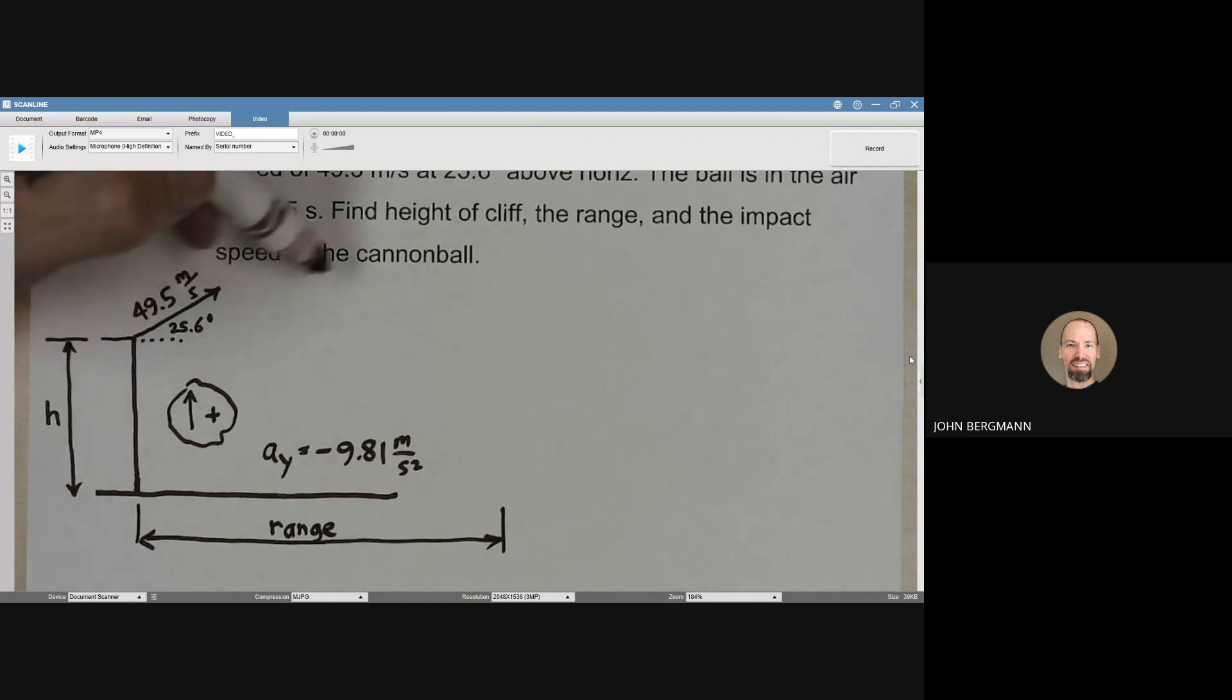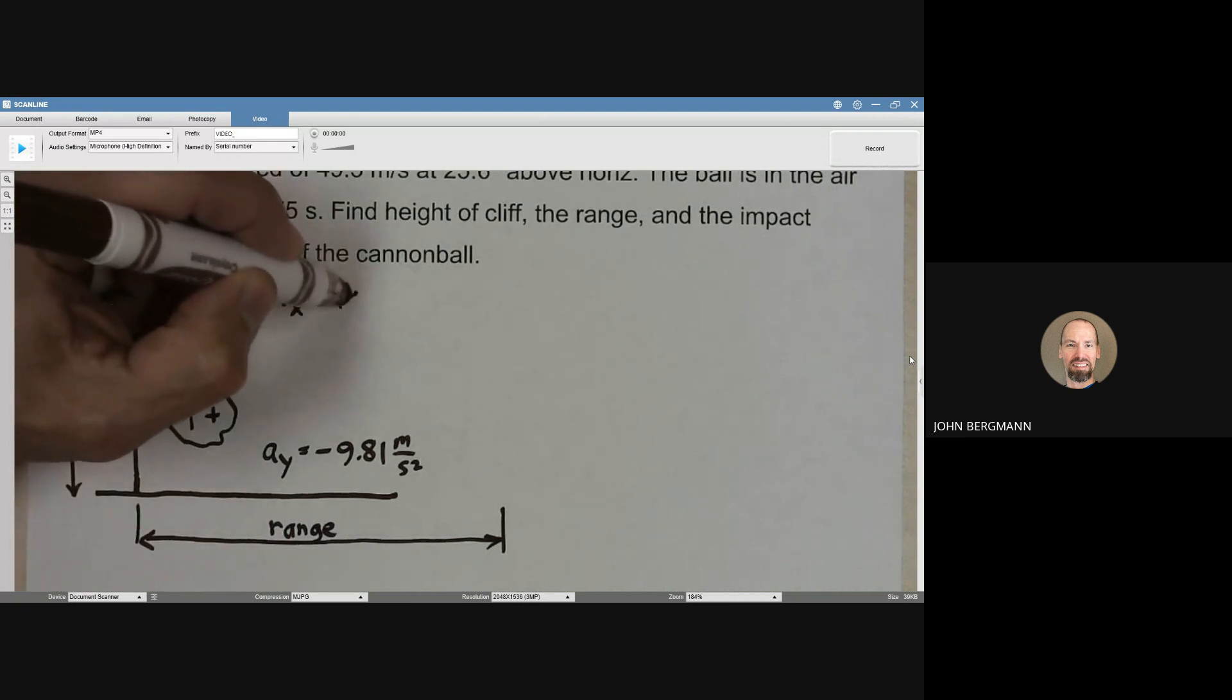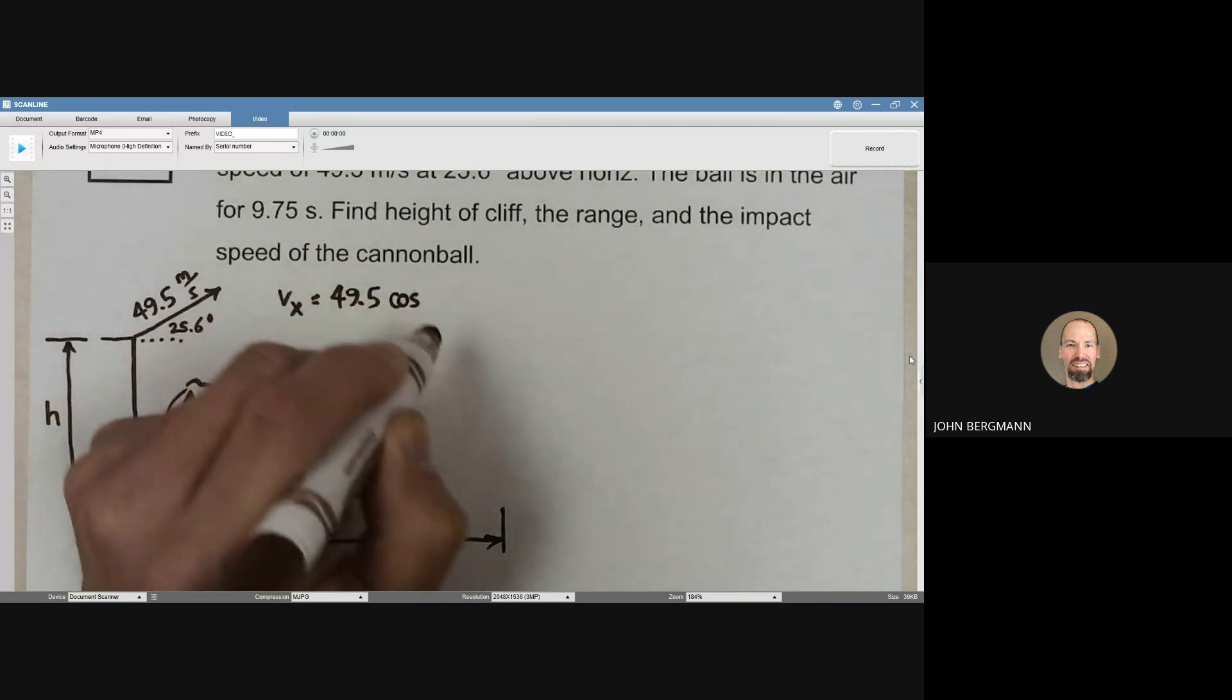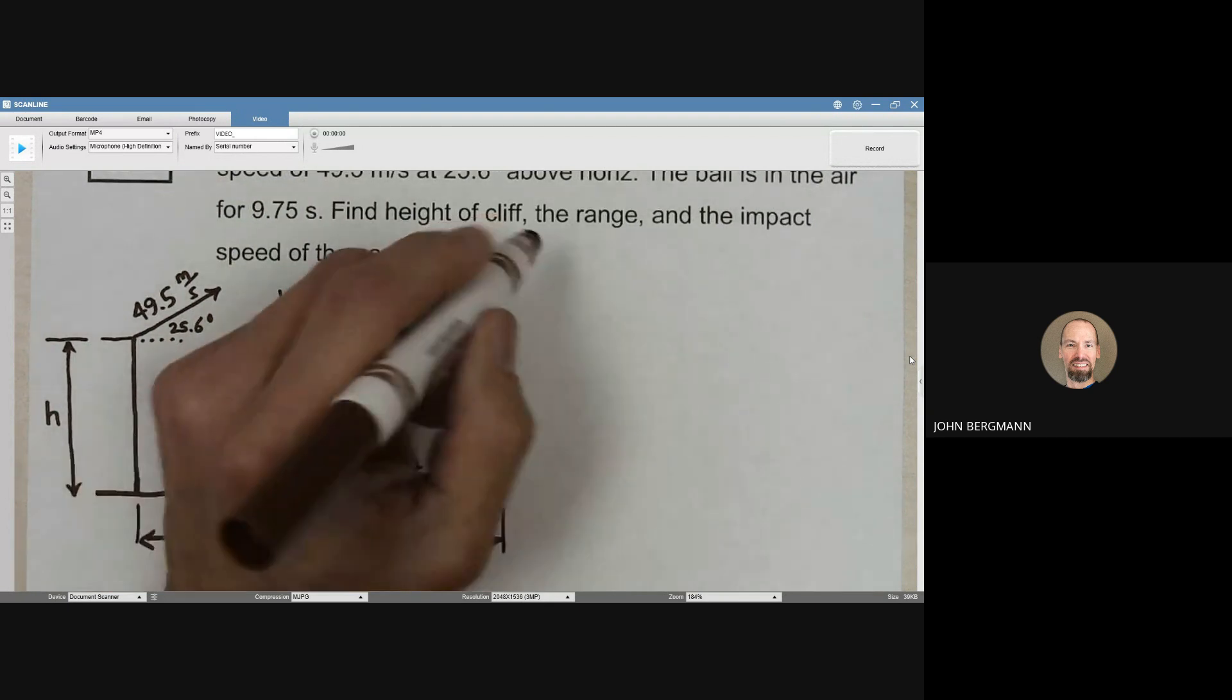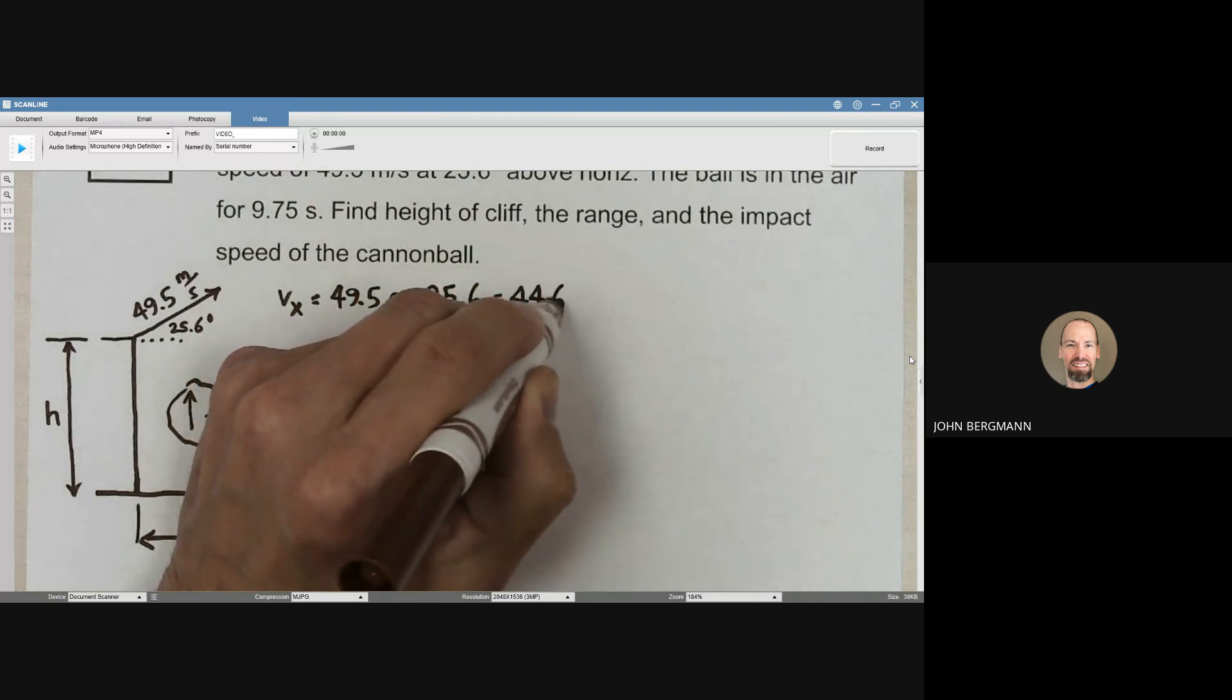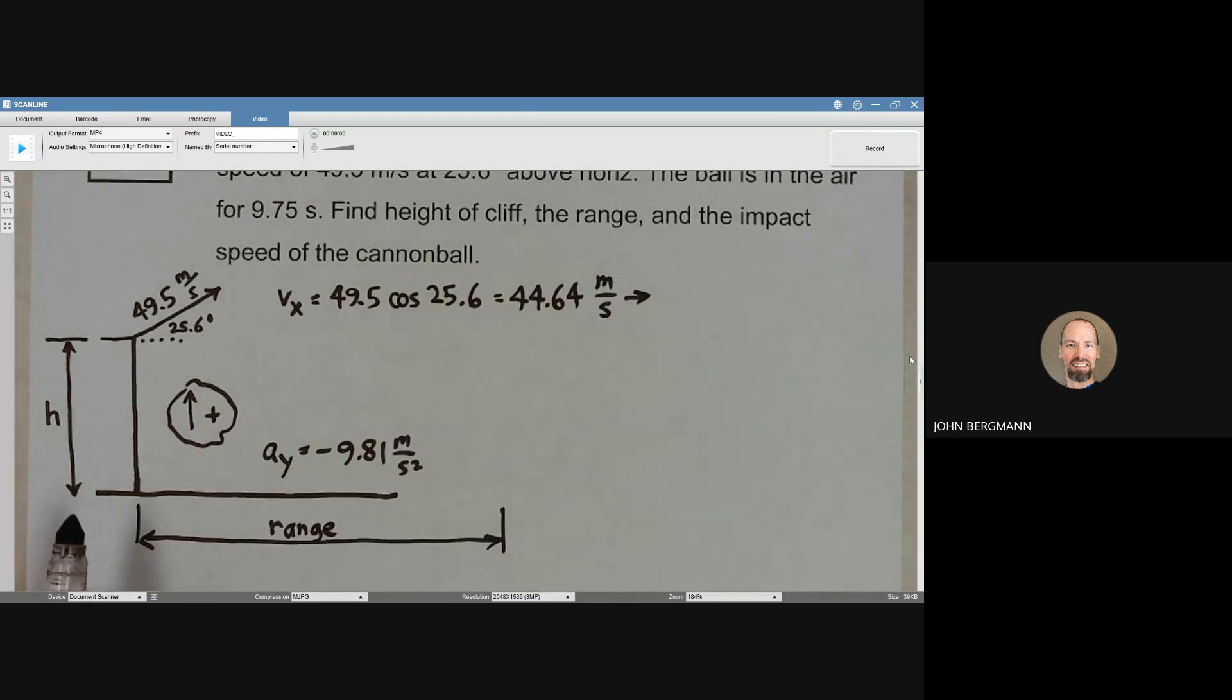Let's find our initial x and y components of velocity. So vx is going to be 49.5 times the cosine of 25.6, and that comes out to be 44.64 meters per second. And that's constant the whole time.